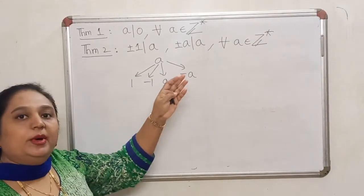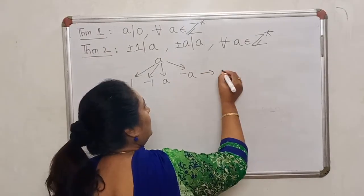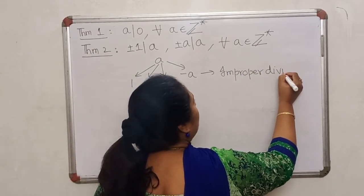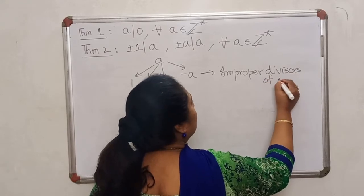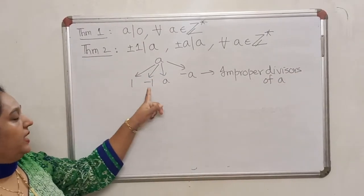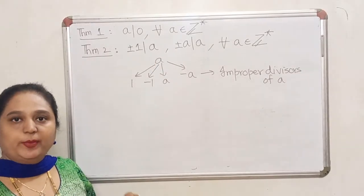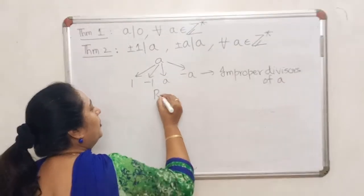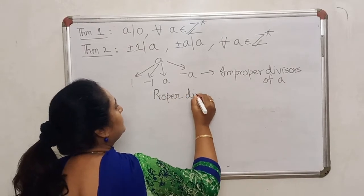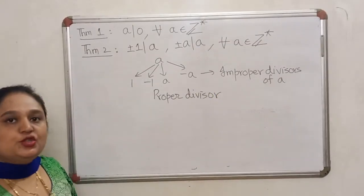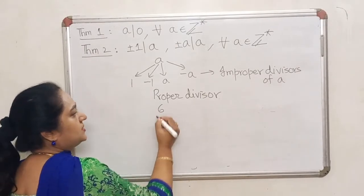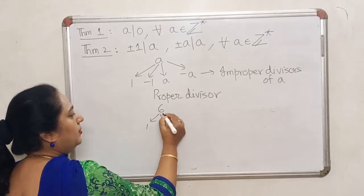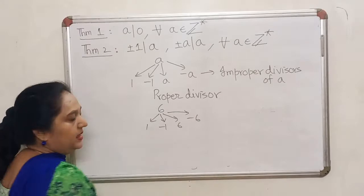So there is nothing very special about these divisors — they are called improper divisors of A. So 1, minus 1, A, and minus A are called the improper divisors of A. Any divisor of A other than these will be called a proper divisor. For example, if you look at 6, the improper divisors of 6 are 1, minus 1, 6, and minus 6.